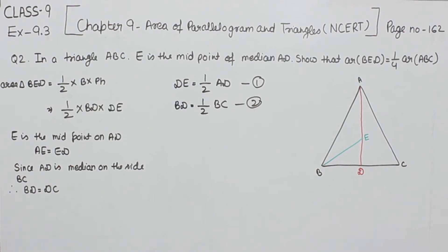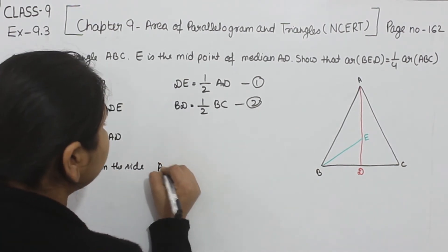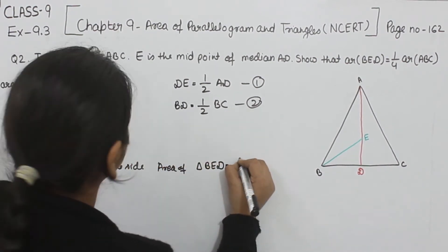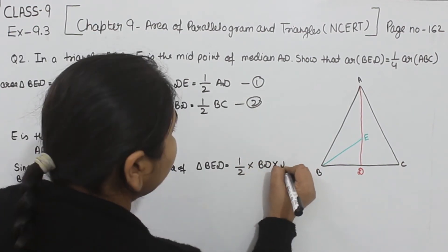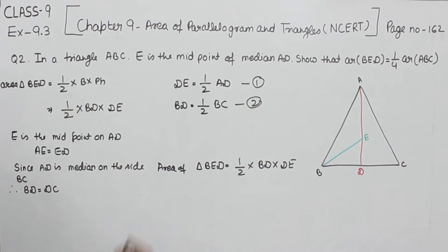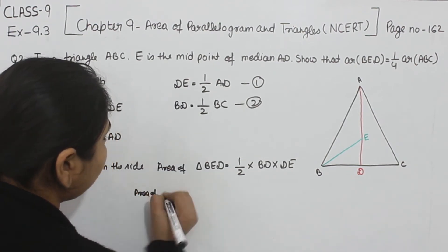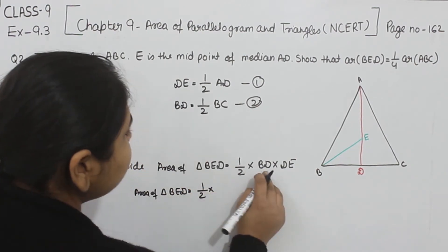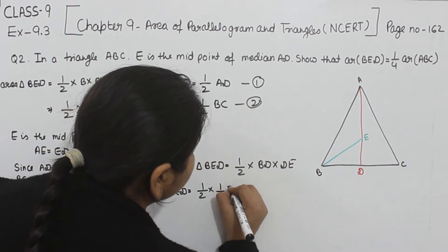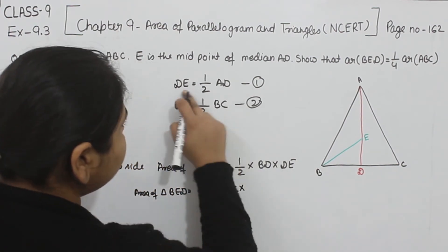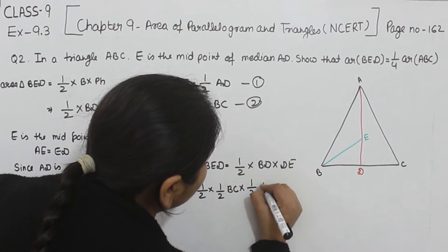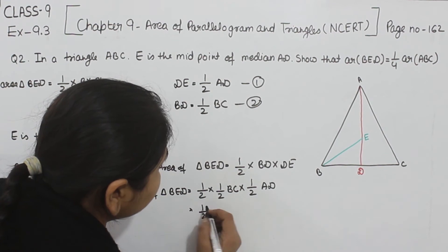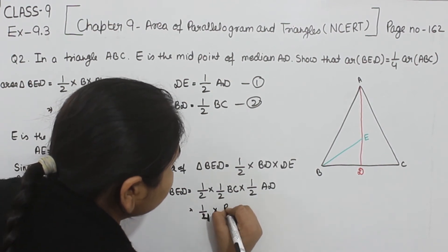Now substituting these values: area of triangle BED equals half of BD multiplied by DE. Replacing BD with half of BC and DE with half of AD, we get: area of triangle BED equals one-half times one-half times BC times one-half times AD, which simplifies to one-fourth multiplied by BC multiplied by AD.